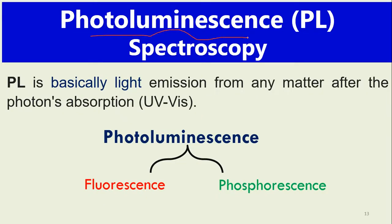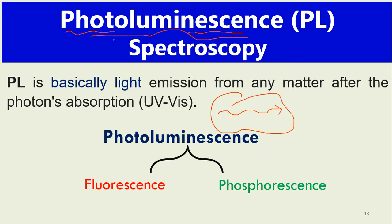Photoluminescence is another very important characterization technique. The word luminescence means emission of light — when we see emission of light, we call it luminescence. The word 'photo' here basically means that this emission of light is caused by photons. So photoluminescence is basically a light emission process from any substance after photon absorption.